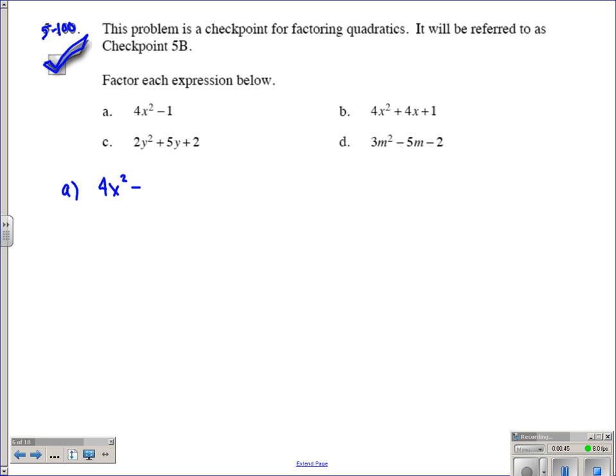4x squared minus 1. First thing I'm going to notice here is this is a binomial. Is there a greatest common factor? In this case the greatest common factor is 1, so we're not going to factor it out. Next thing I want to look at here is it addition or subtraction? That's pretty obvious, it's subtraction. So I have the potential for it to be a difference of two squares. We have 4x squared and we have one, so this is a perfect square and this is a perfect square.